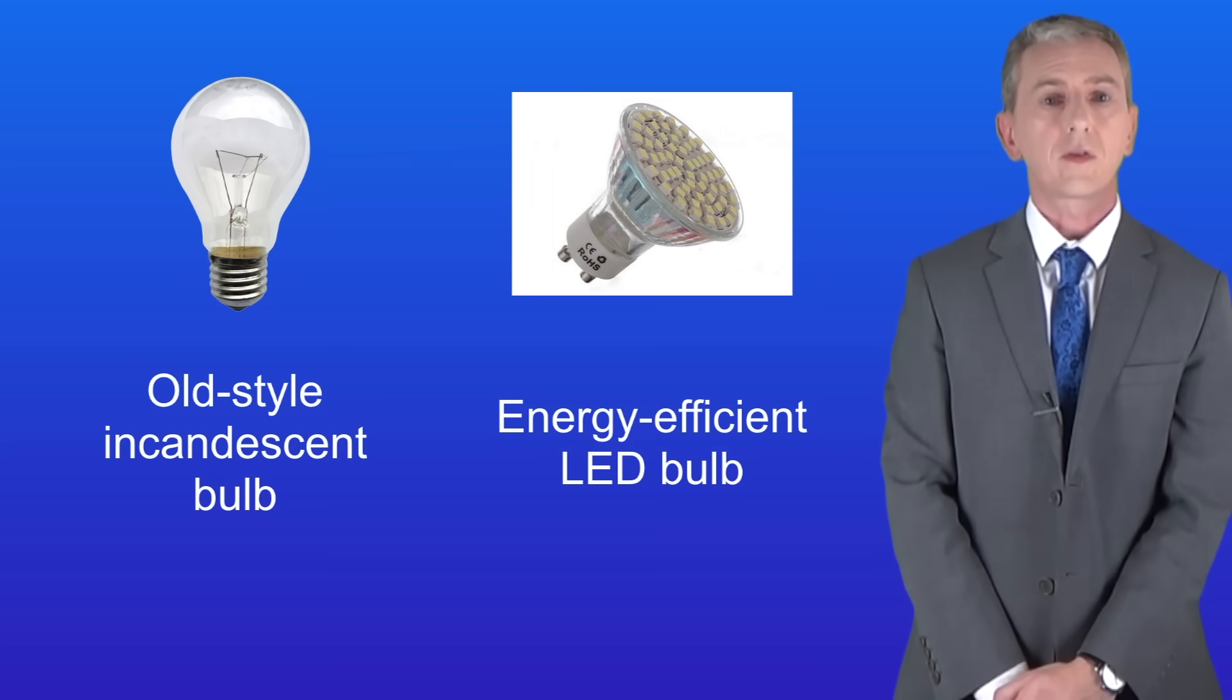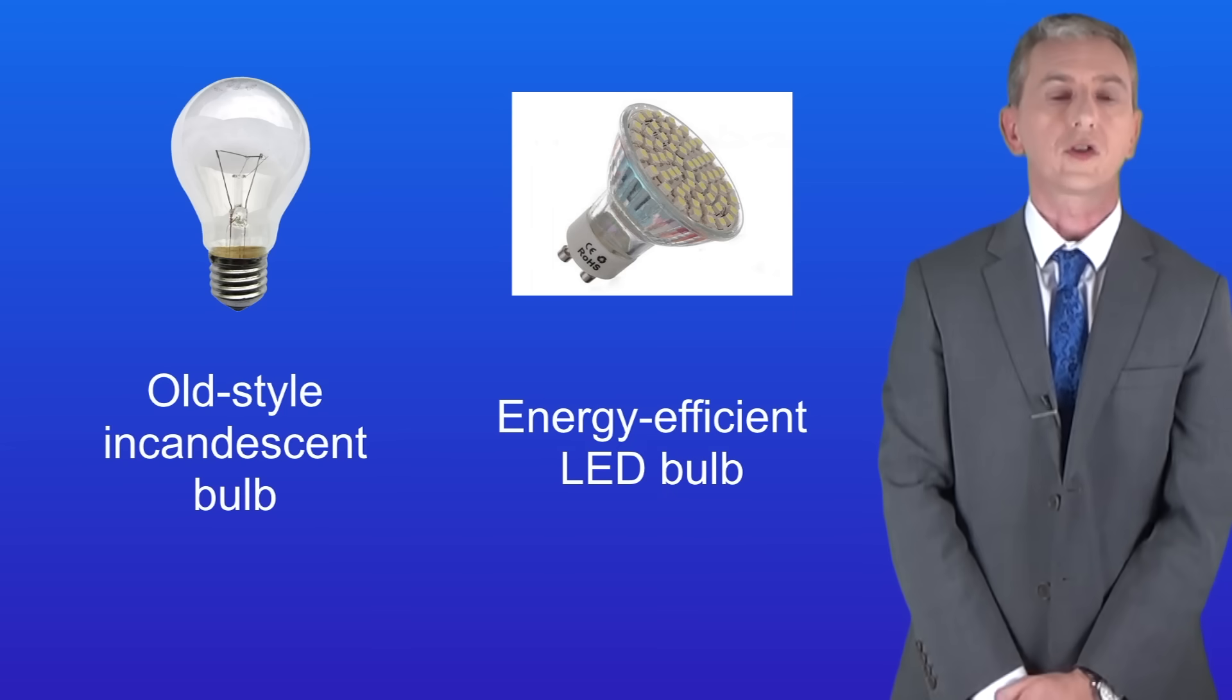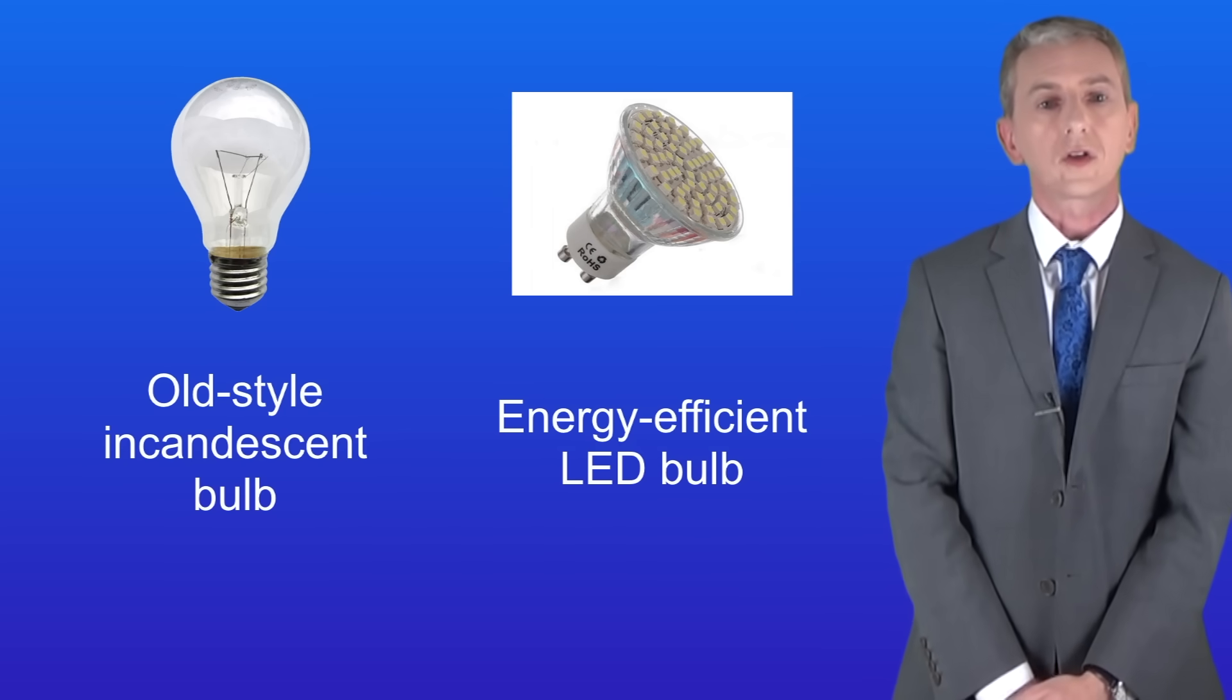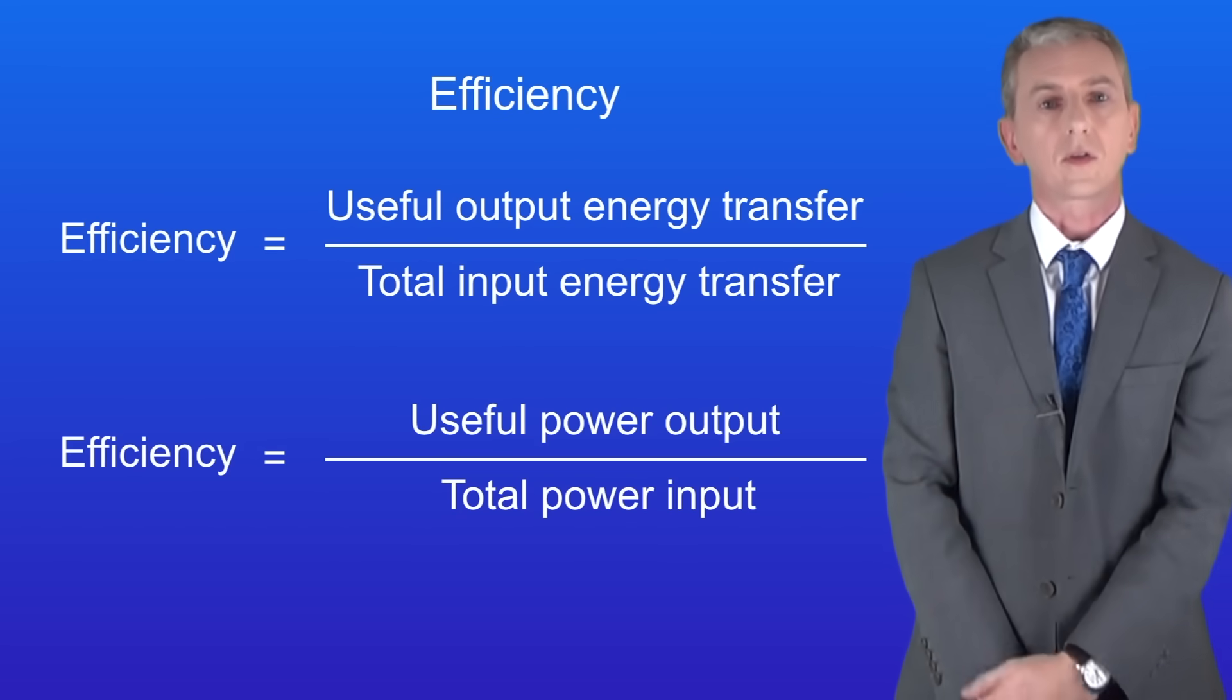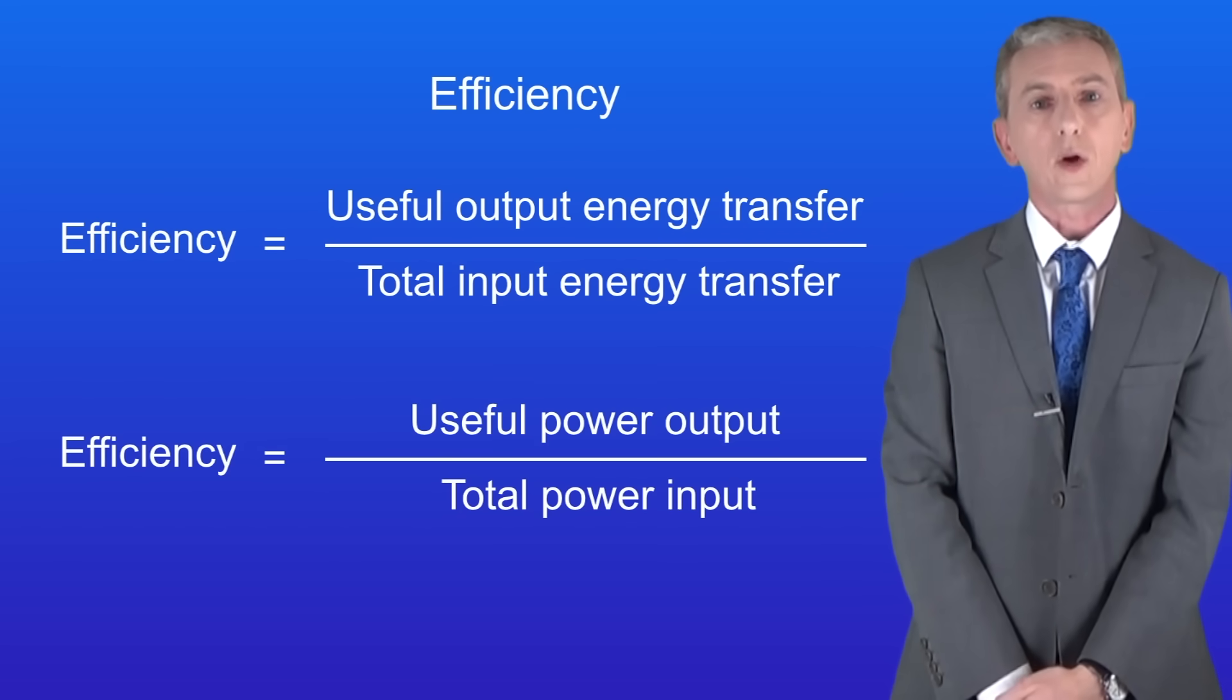Efficiency tells us what fraction of the energy we put into an appliance is transferred to useful forms of energy. We calculate efficiency using these equations. Efficiency equals the useful output energy transfer divided by the total input energy transfer.